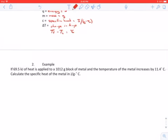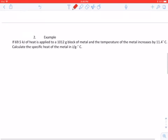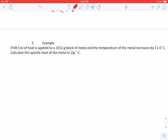So let's look at an example and see if we can't solve one of these problems. All these problems are going to be plug and chug problems. So if we read through here, it says if 69.5 kilojoules of heat is applied to a 1012 gram block of metal, and the temperature of the metal increases by 11.4 degrees C, calculate the specific heat of the metal in joules per gram degree C. So let's highlight our fun facts. 69.5, 1012 grams, 11.4, and we're looking for specific heat.